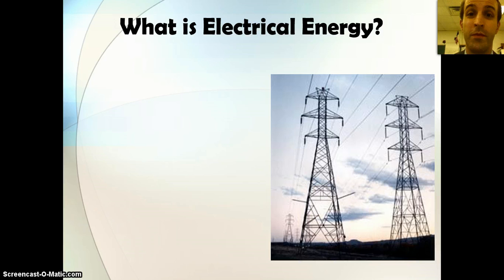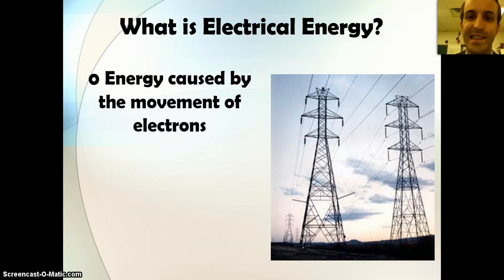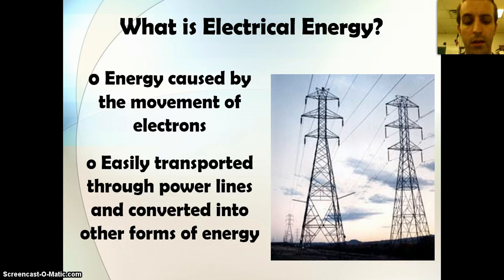You have electrical energy. This is the stuff that flows through power outlets, and this is any energy caused by the movement of electrons, that is to say if electrons are moving along something, it's electrical. A pretty easy way to think of it is if it's going along power lines, it's probably electrical.